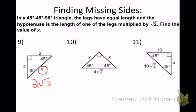Number 10: both sides are going to be 4. Number 11: Claire, you already knew the other side was 10, so both legs are 10 — they have to be the same in a 45-45-90.